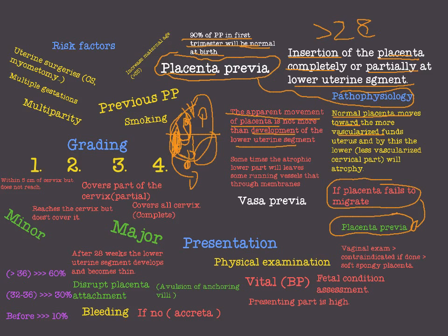The lower uterine segment will develop and become larger, pushing the placenta toward the upper segment. Some of the lower part of the placenta will atrophy, and in some cases it leaves running vessels without any placenta tissue. Those running vessels can invade the membranes of the uterus, making a case of vasa previa.